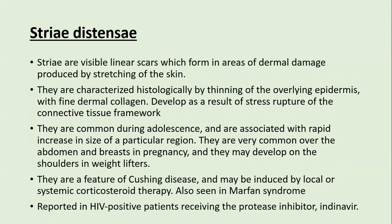Striae distensae are linear scars formed in areas of dermal damage produced by stretching of the skin, characterized histologically by thinning of the epidermis and dermis with fine dermal collagen. They are commonly seen in adolescence, associated with rapid regional growth — over the abdomen and breasts in pregnancy, and over the shoulders and back in weight lifters. They are also a feature of Cushing's disease, induced by local or systemic corticosteroids, and seen in Marfan syndrome and HIV-positive patients receiving protease inhibitors like indinavir.